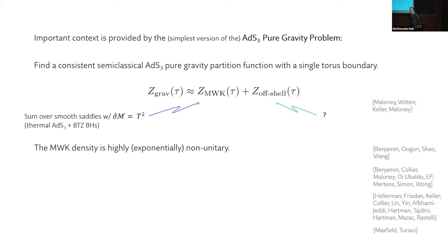There's important context provided by the AdS3 pure gravity problem, the simplest version of which is: find a consistent semi-classical partition function with a single torus boundary for a theory that would contain only gravitons and black holes. Famously, the natural prescription for computing this partition function Z_grav, which is the sum over smooth saddles with torus boundary, fails. It gives you a highly non-unitary density of states.